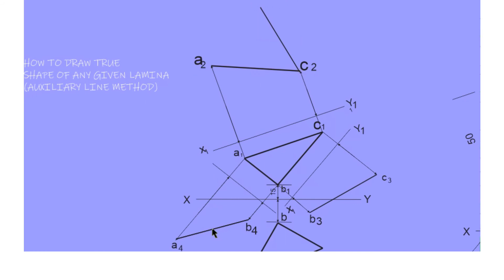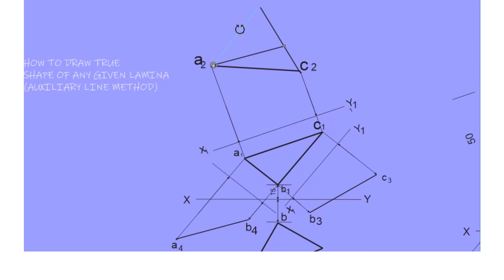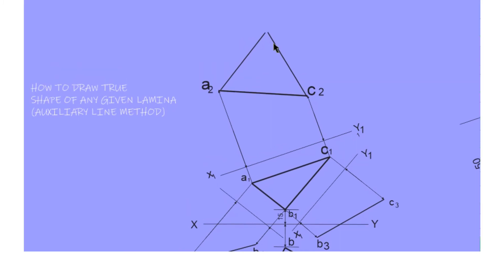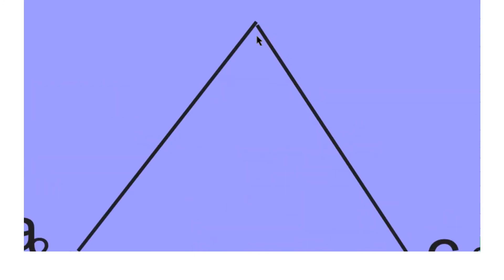Similarly, take the length of A4B4, place it on A2, and draw an arc. Where the two arcs meet each other, you draw your line — as you can see in mine, that's where they meet and you draw out your new triangle.